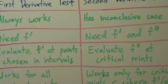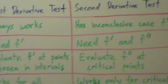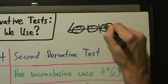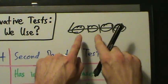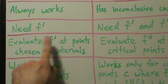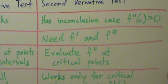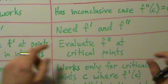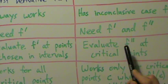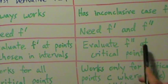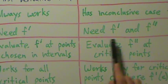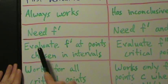Usually you're going to end up evaluating at more points with the first derivative test than with the second derivative test. For example, if you have three critical points on the number line, that divides the line into four intervals — so you have to choose a number from each interval, giving you four points to evaluate f prime at. But with the second derivative test, you only evaluate at the three critical points themselves. So even though you have the extra step of calculating the second derivative, you have fewer points to evaluate it at.